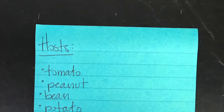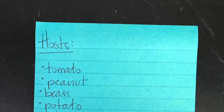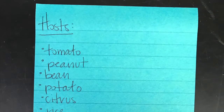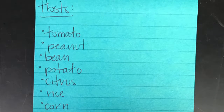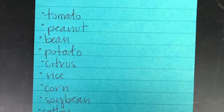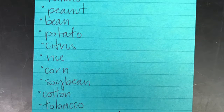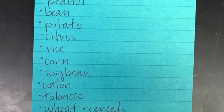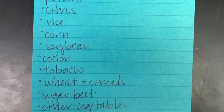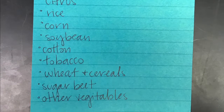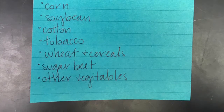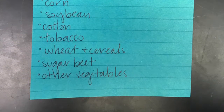Even though nematodes can infect quite a large variety of plants, the most common or most economically important include tomatoes, peanuts, beans, potatoes, citrus, rice, corn, soybean, cotton, tobacco, wheat and other cereals, sugar beets, and other vegetables.